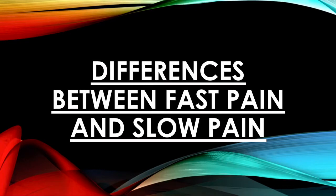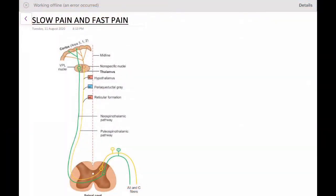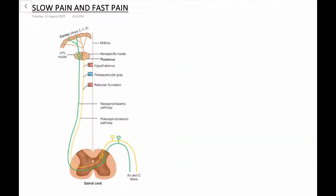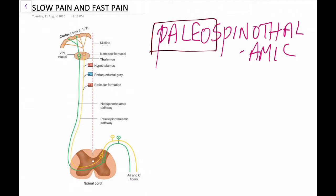Hello everyone. In this video I'll be talking about the differences between fast pain and slow pain. Slow pain is carried by the paleospinothalamic pathway. 'Paleo' means old — it is a phylogenetically older pathway.